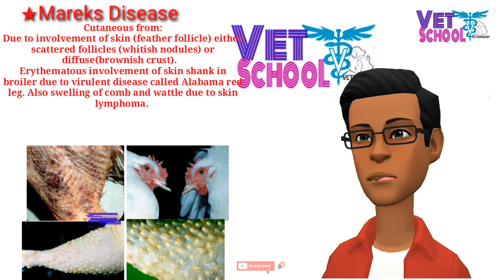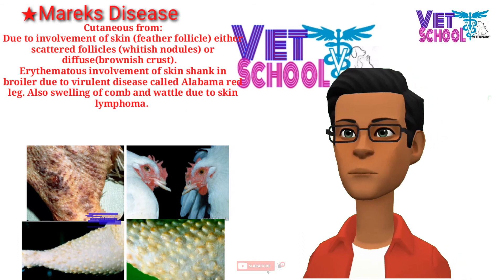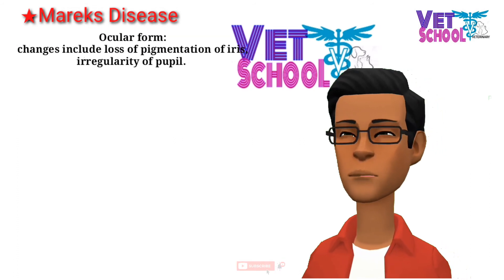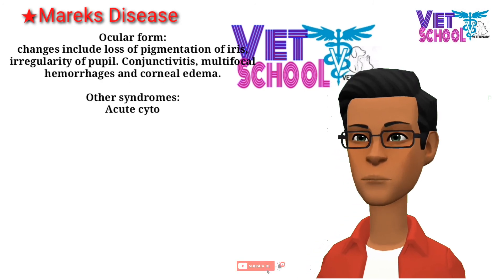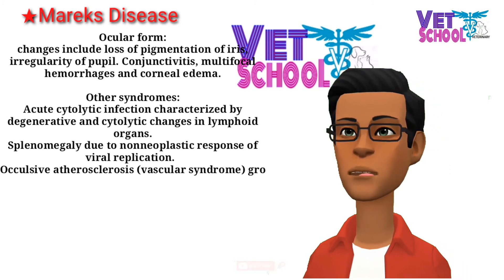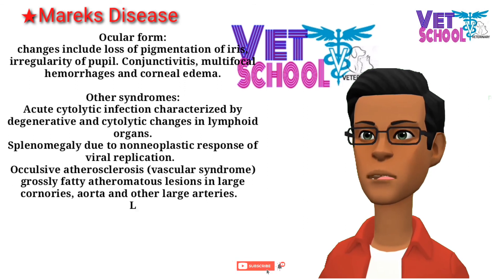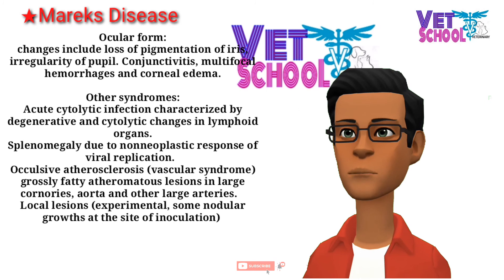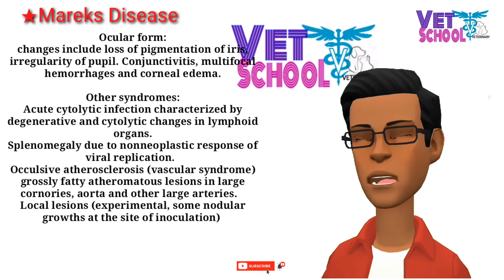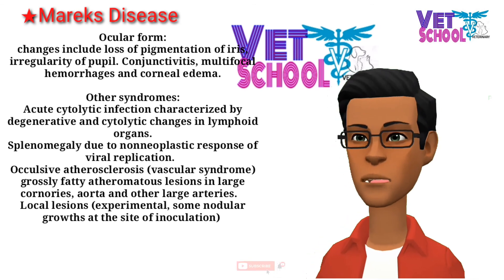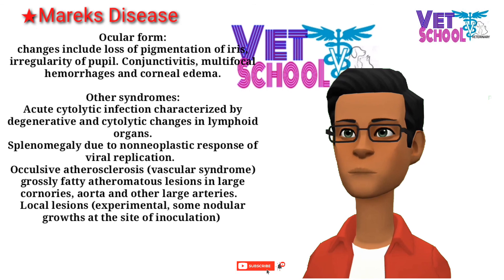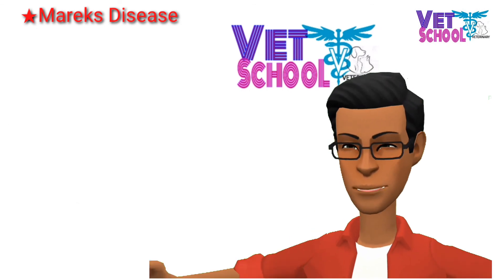Cutaneous form: due to involvement of skin feather follicles, either scattered follicles with whitish nodules or diffuse brownish crust erythematous involvement of skin shank in broilers due to virulent disease, called Alabama red leg. Swelling of the comb and wattle due to skin lymphoma is also seen. Ocular form: changes include loss of pigmentation of iris, irregularity of iris, irregularity of pupil, conjunctivitis, multifocal hemorrhages, and corneal edema. Other syndromes include acute cytolytic infection characterized by degenerative and cytolytic changes in lymphoid organs, splenomegaly due to non-neoplastic response of viral replication, and occlusive atherosclerosis vascular syndrome with grossly fatty atheromatous lesions in large coronaries, aorta, and other large arteries. Some nodular growths at the site of inoculation are seen in experimental local lesions.